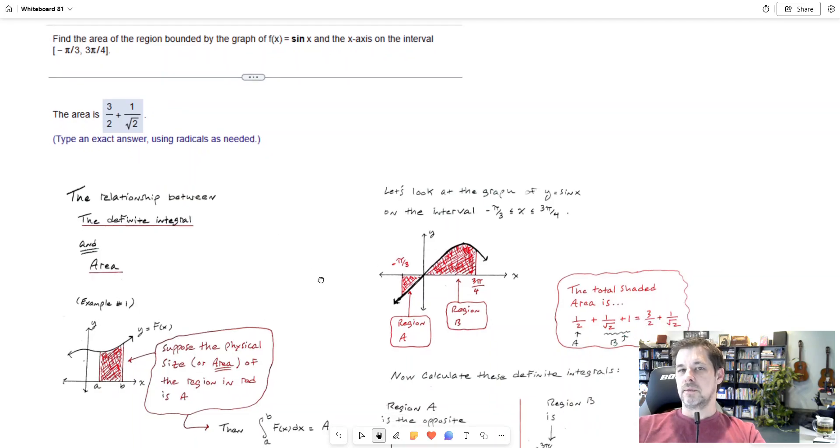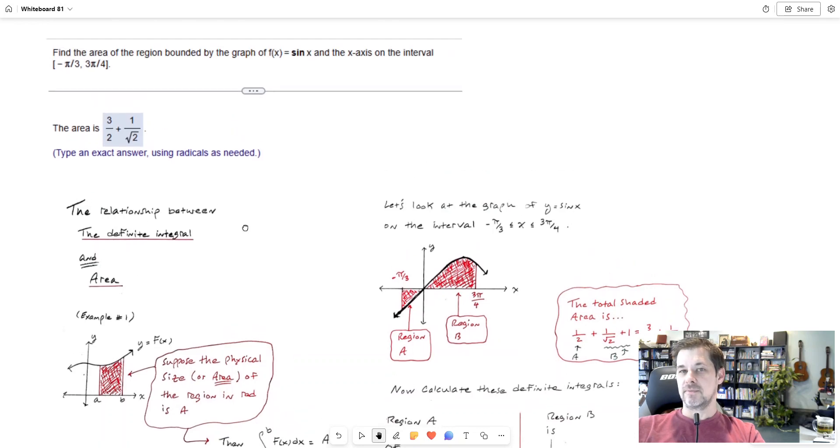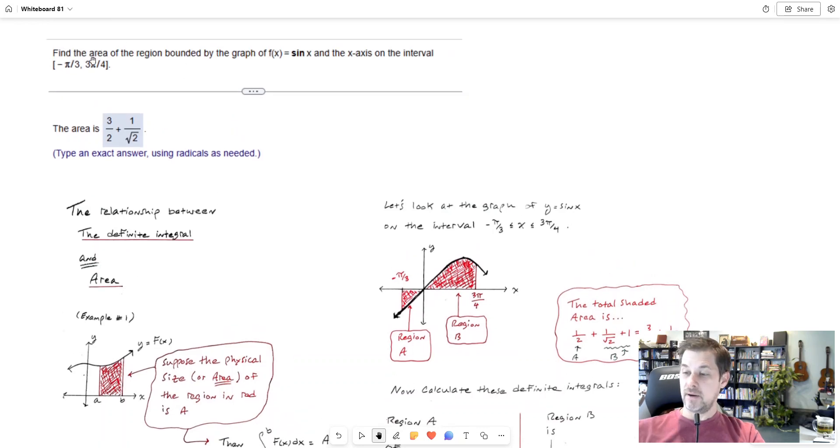So two things jump out at me about this: one is area and then the next is that I have a specific curve. Let's talk about the relationship between the definite integral and area first because finding a specific area on a graph is at least one component of this question, and then once we understand that we'll talk about how you solve this question in particular.